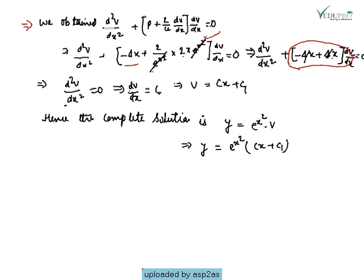The whole term becomes 0, so we have d²v/dx² = 0, which implies dv/dx = c (a constant). Integrating, dv = c dx, so v = cx + c₁. Therefore, the complete solution is y = u·v = e^(x²)·(cx + c₁).